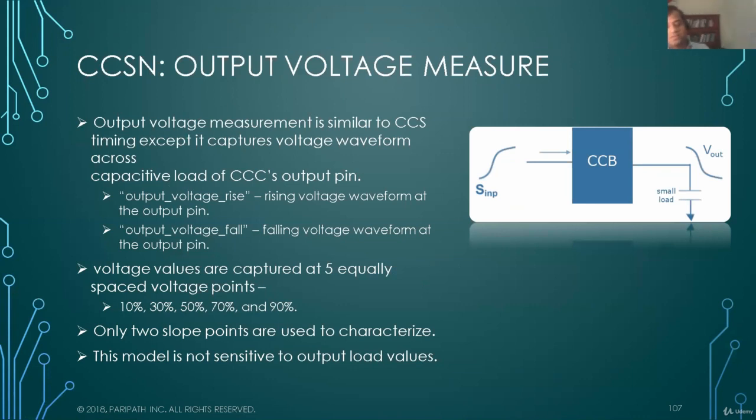And the other difference is the voltage values are captured at five equally spaced voltage points. 10, 30, 50, 70 and 90 are the most suitable choice. You can have other choices as well. On ECSM, however, it is arbitrary to maintain the accuracy of the voltage waveform. Only two slope points are used to characterize because it's not very sensitive to slope. And it's not sensitive at all to the output load values.